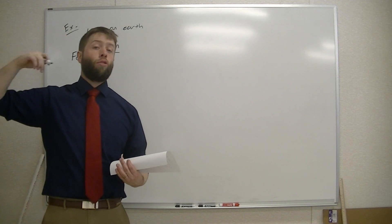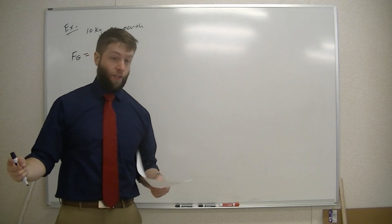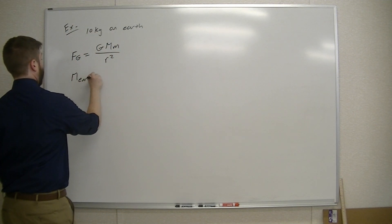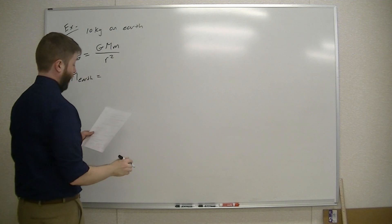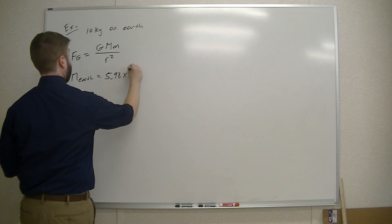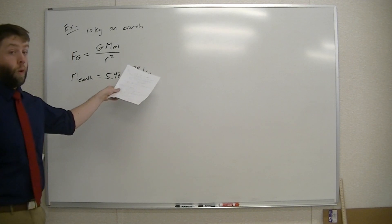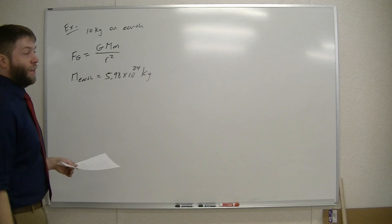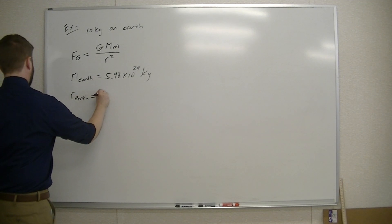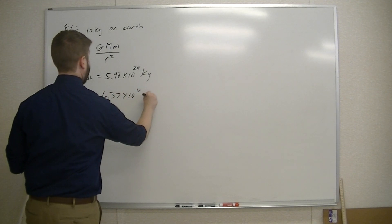So I need two different things: I need the mass of the Earth and I need the radius of the Earth. The mass of the Earth — which you can look up or just memorize in a couple of days — is 5.98 times 10 to the 24th kilograms. The radius of the Earth is equal to 6.37 times 10 to the 6th meters.